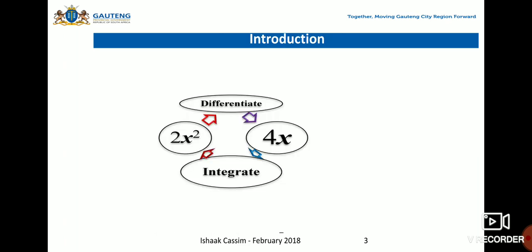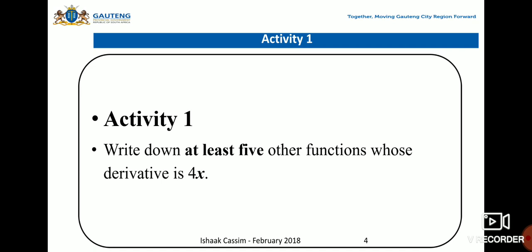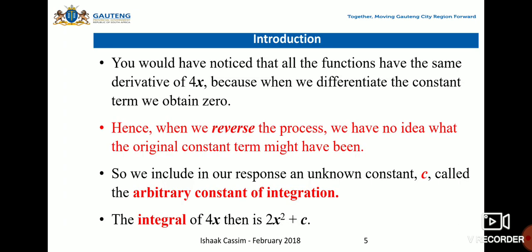As an introduction, consider differentiating 2x². When differentiated, 2x² gives 4x. Activity: Write down at least five other functions whose derivative is 4x. You would have noticed that all these functions have the same derivative of 4x because when we differentiate a constant term, we obtain zero.